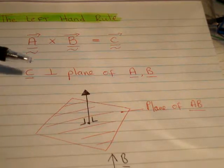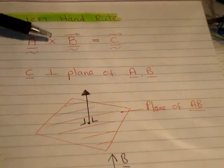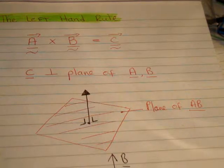So, the vector c is perpendicular to the plane of a, b, whereby c is the cross product of a, b. So, a cross b, that's always perpendicular to the plane of a, b.